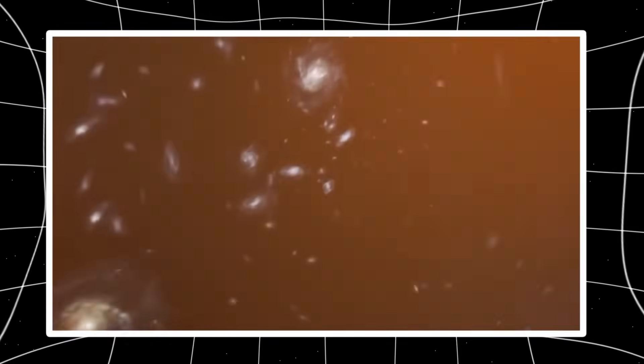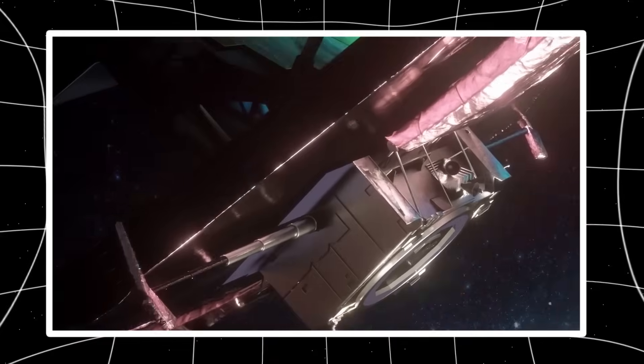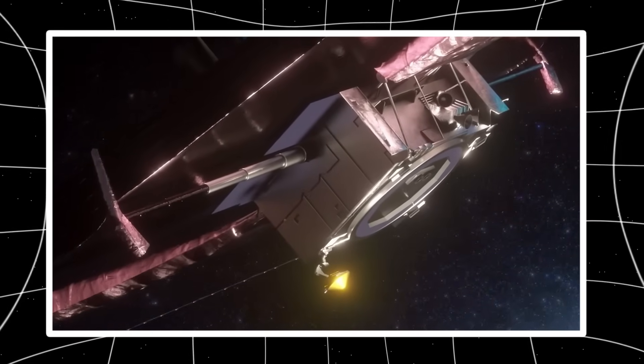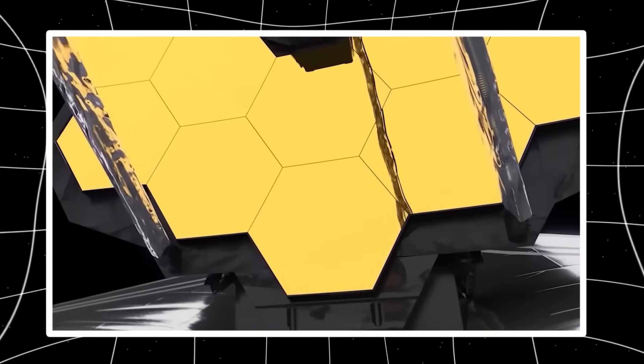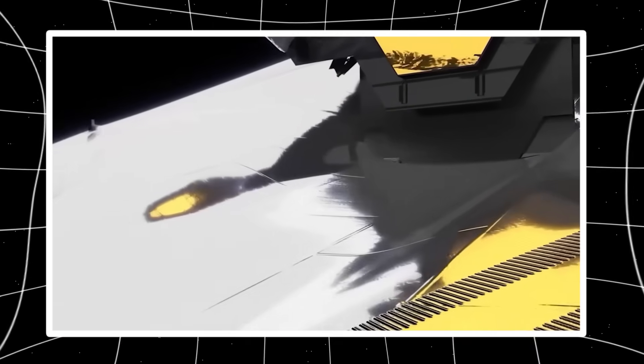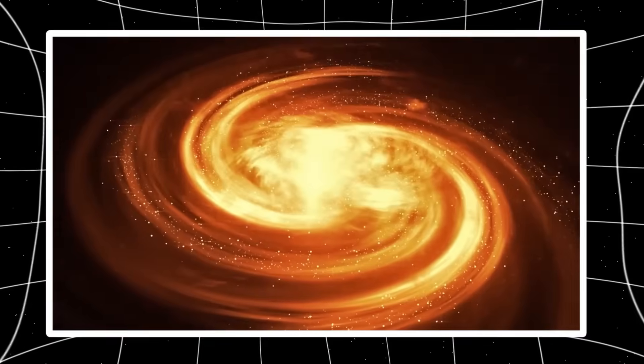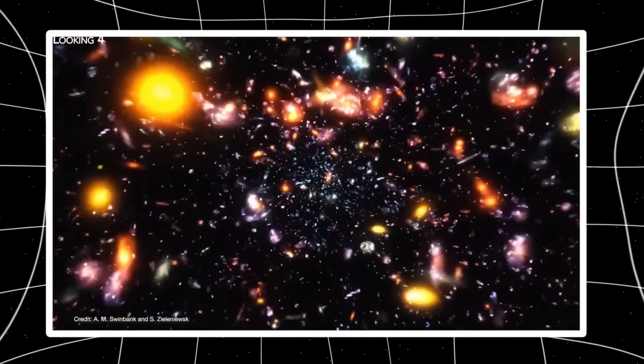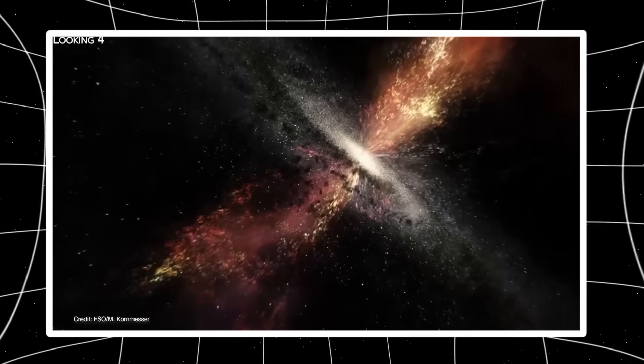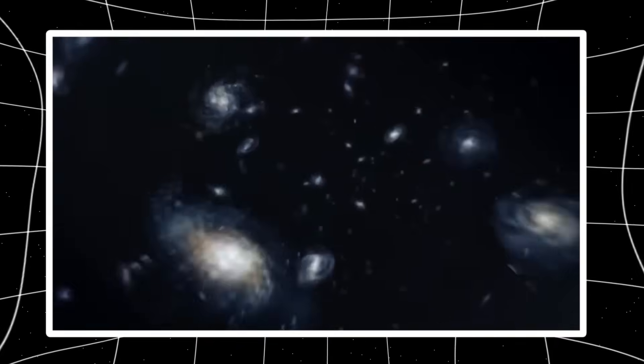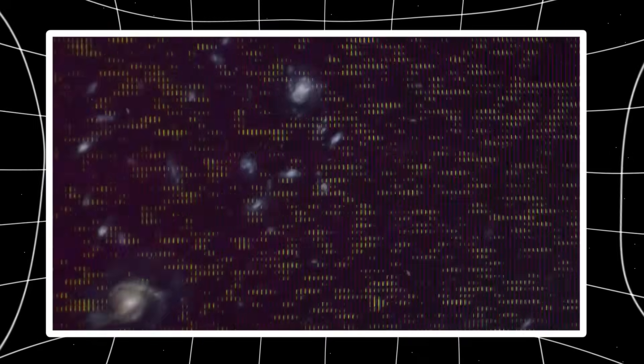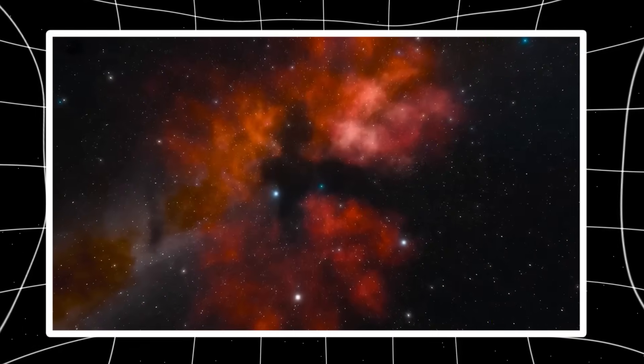But here's the mystery: these structures are too uniform, too interconnected, too precise to emerge so quickly after the Big Bang. According to the old models, it should have taken far longer for gravity to sculpt such order out of chaos. And yet Webb shows us a universe that was organized almost from the start, a design written into reality itself.